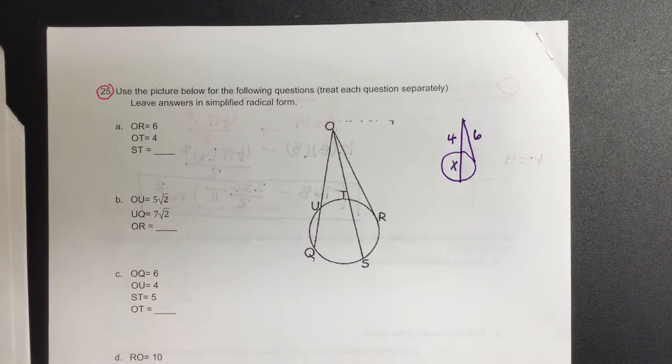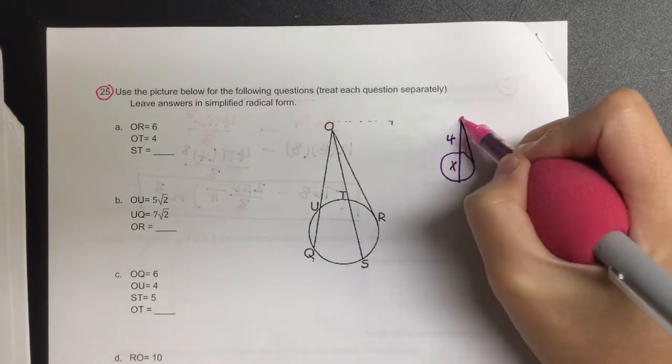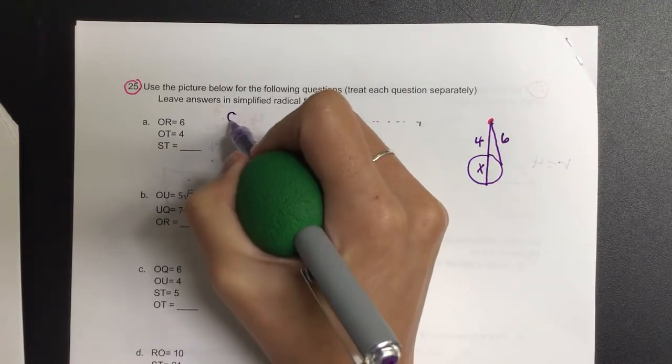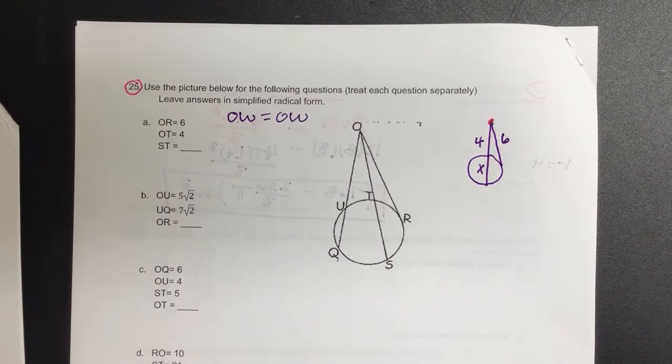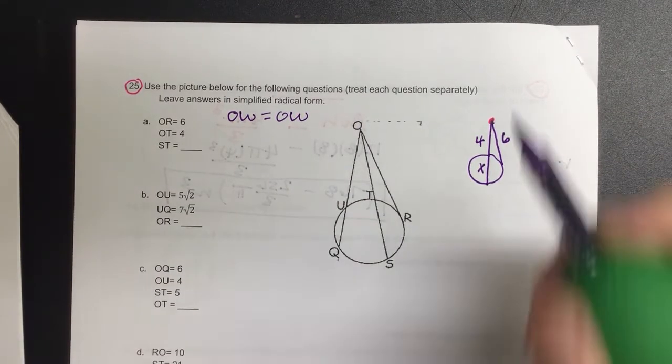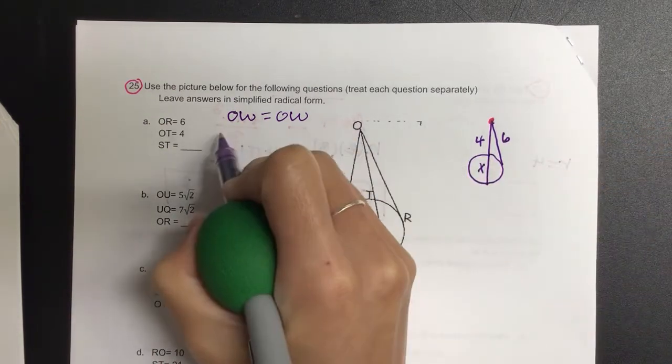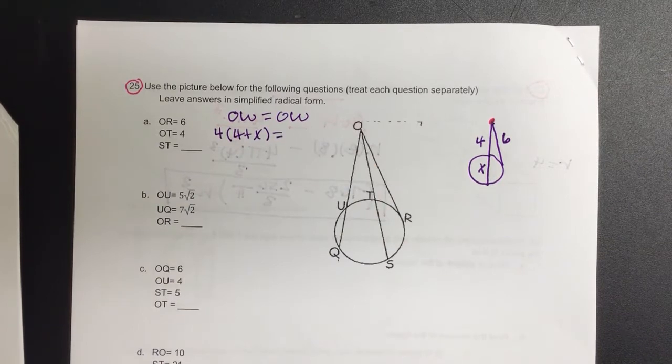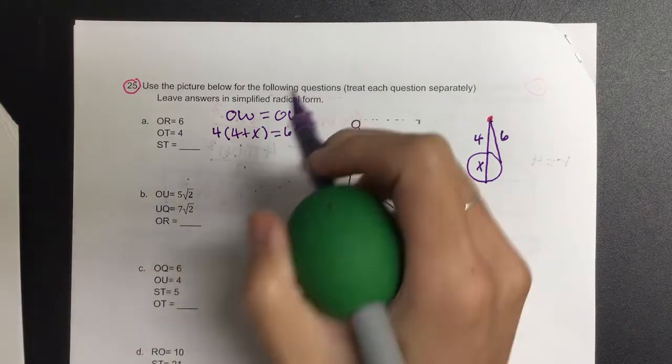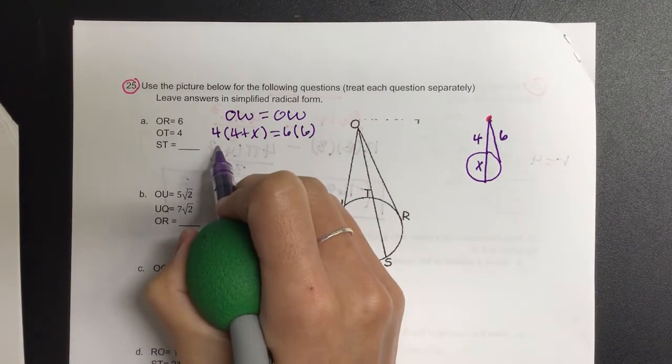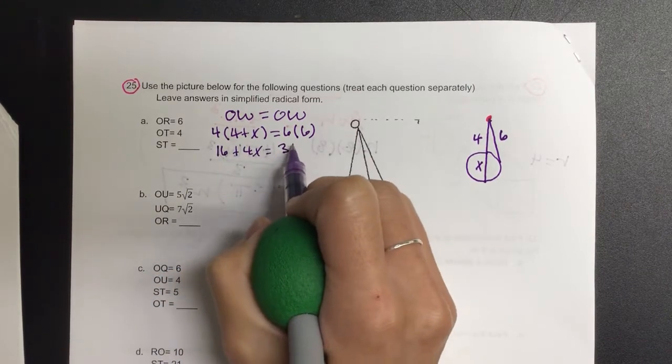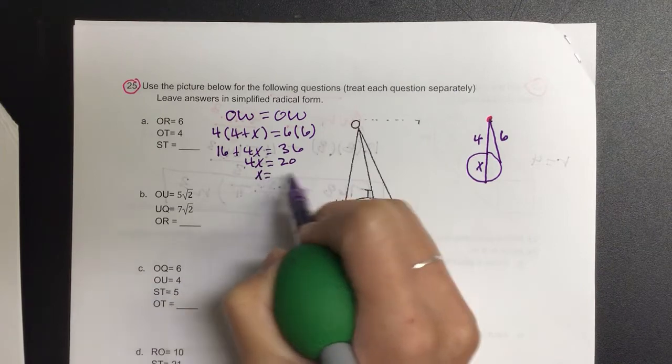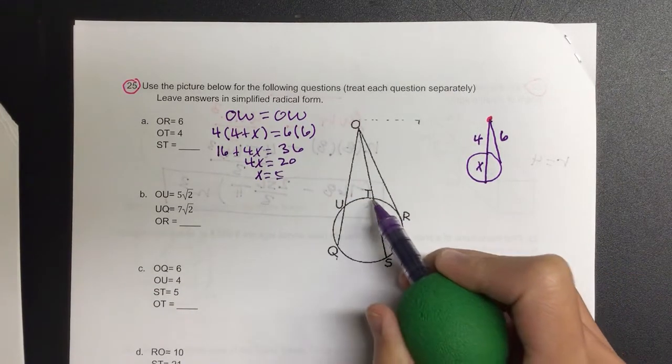Now, this is the power of a point one. So we have 4, and then the whole thing is 4 plus X. For the other segment, the outside is 6, and the whole thing is 6 plus the imaginary 0. Let's go ahead and simplify. We have 16 plus 4X is equal to 36. Then we get 4X is equal to 20. So how many is my X? 5. And it's asking us for TS, so that is our 5.